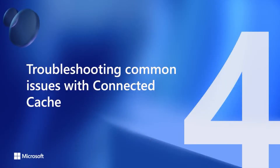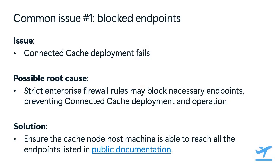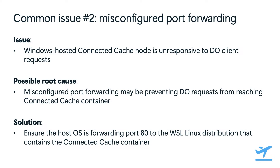Now we'll talk about some common issues and how to troubleshoot them. A common issue that customers face is that their Connected Cache deployment fails on their host machine. A possible root cause is that strict enterprise firewall rules may block necessary endpoints and prevent Connected Cache deployment and operation. The solution here is to ensure that your cache node host machine is able to reach all the endpoints listed in our public documentation. Another common issue is that their Windows-hosted Connected Cache node is unresponsive to DO client requests. A possible root cause is misconfigured port forwarding, which may prevent DO requests from reaching the Connected Cache container. The solution is to ensure that the Windows host OS is forwarding port 80 to the Windows Subsystem for Linux distribution that contains the Connected Cache container.